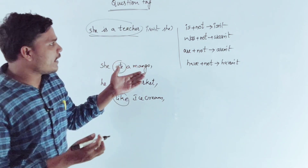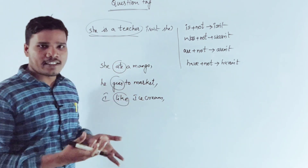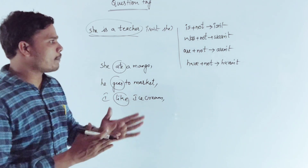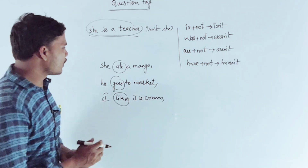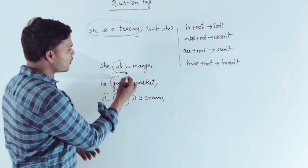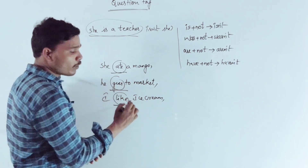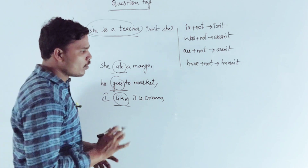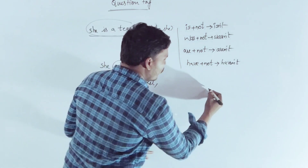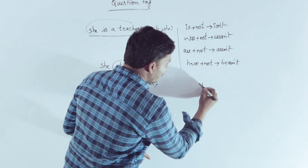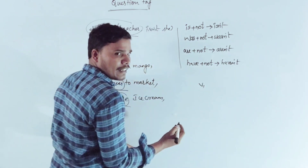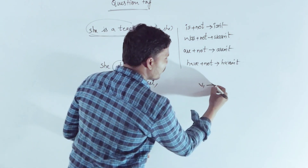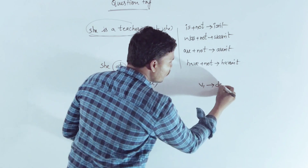It's a main verb. It's a helping verb. This is a main verb — there is a sentence. If we have a V1, we have a helping verb — it's a doing verb.